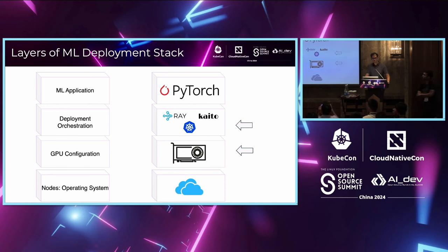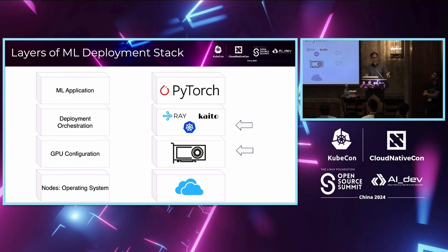At a high level, you have the ML application that can be written in PyTorch or TensorFlow. Then you have a deployment orchestration layer, which is subdivided into two layers — tools like KubeRay operator or Kaito, which run on top of Kubernetes. And then you have the GPU configuration layer below that, and finally nodes in the operating system, which are either managed by the cloud provider or your on-prem infra team.